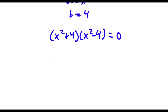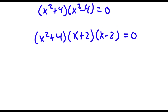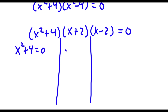Now x squared minus 4, this is the same thing as x plus 2 times x minus 2. So setting each factor equal to zero, I have x squared plus 4 is equal to 0, x plus 2 is equal to 0, and x minus 2 is equal to 0.